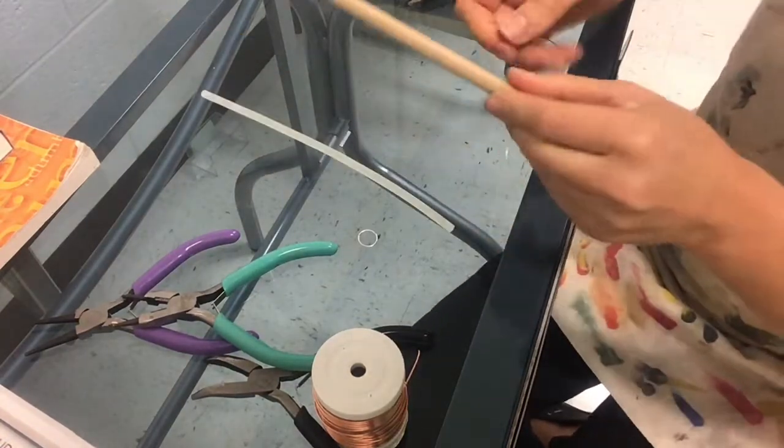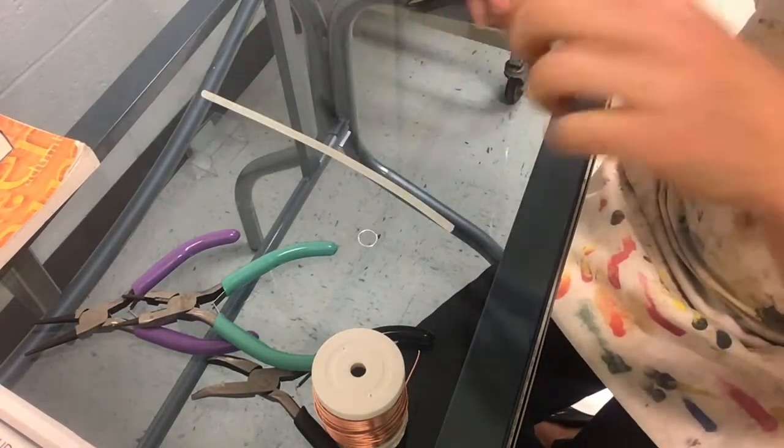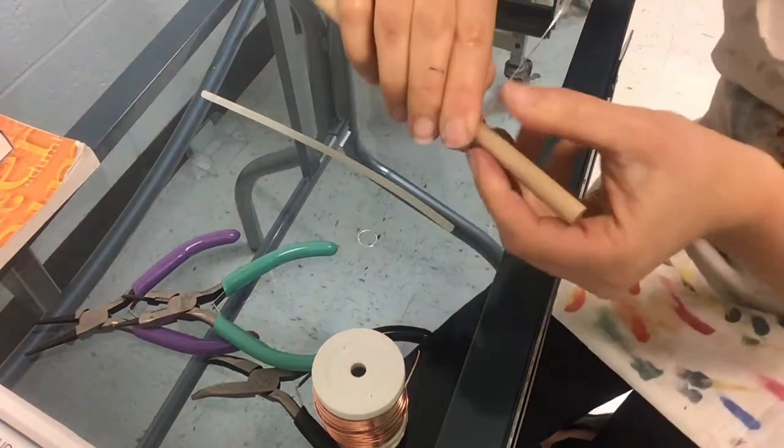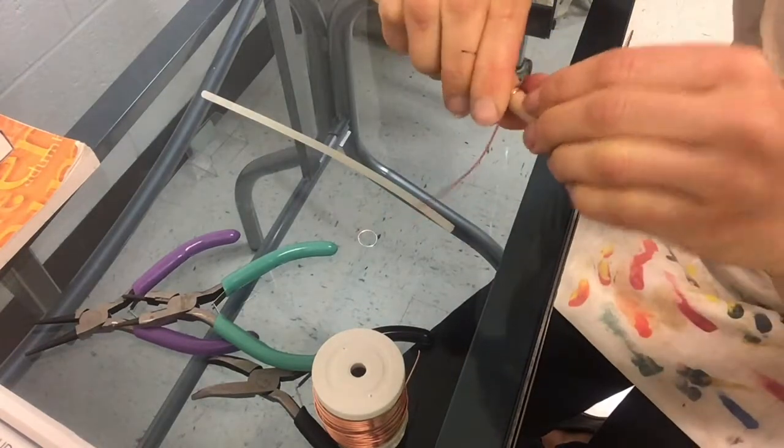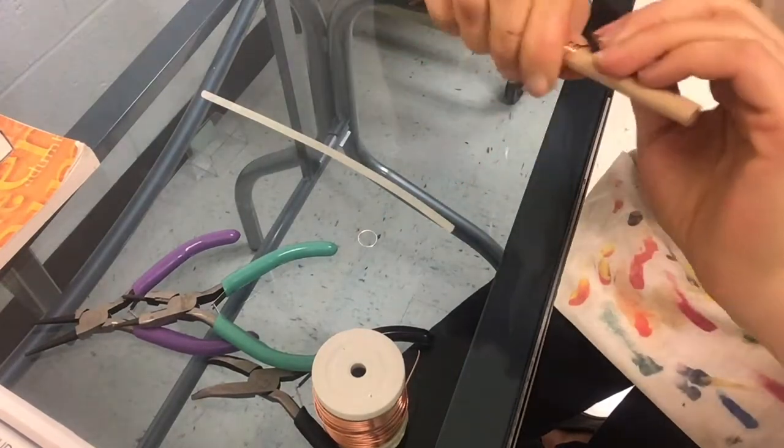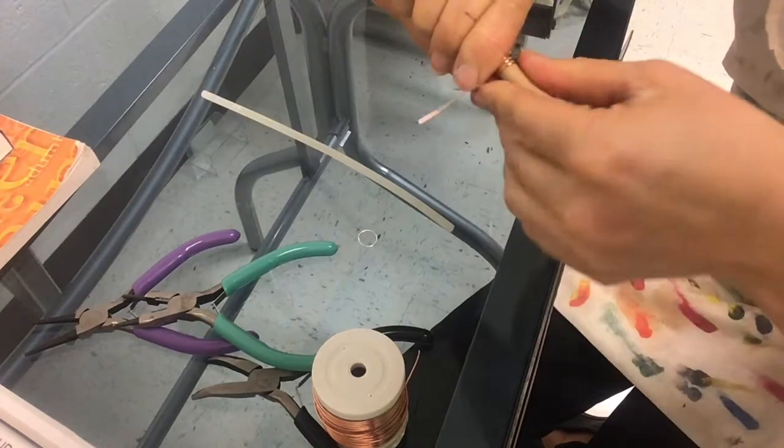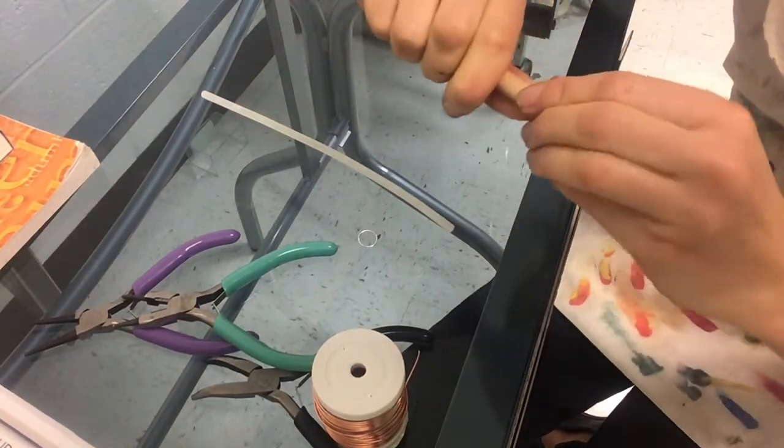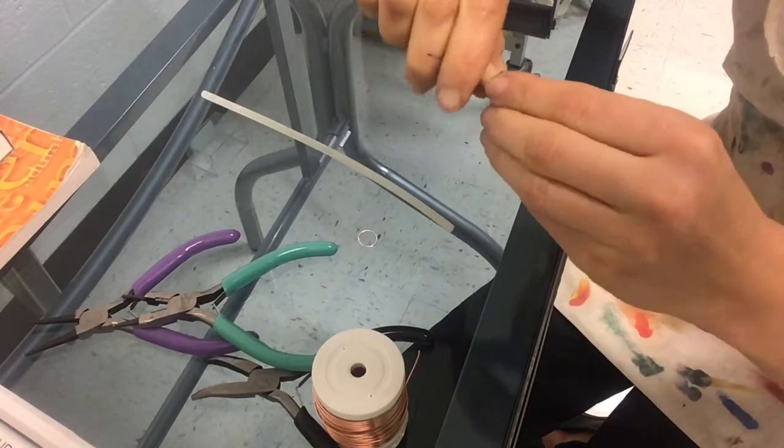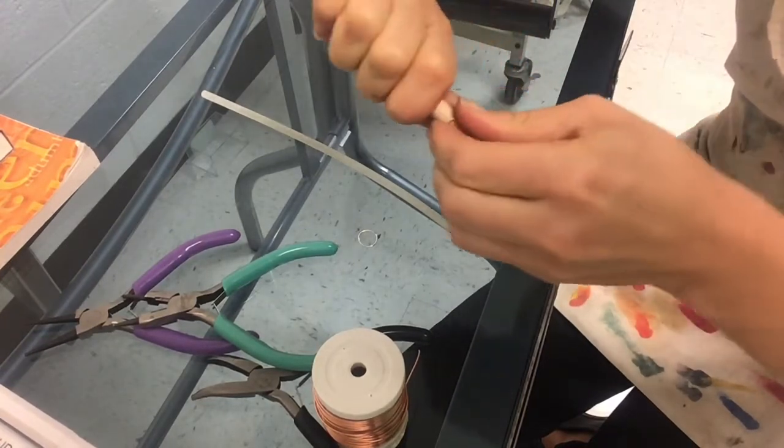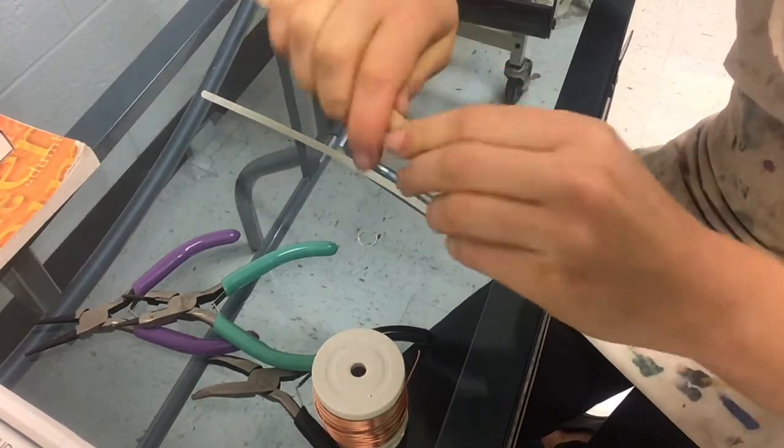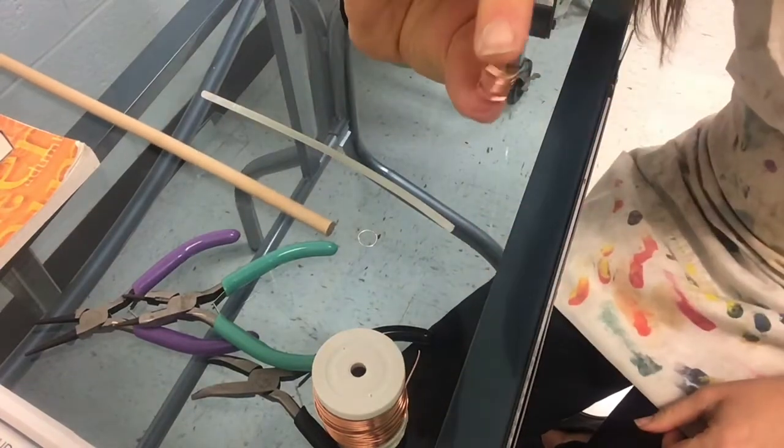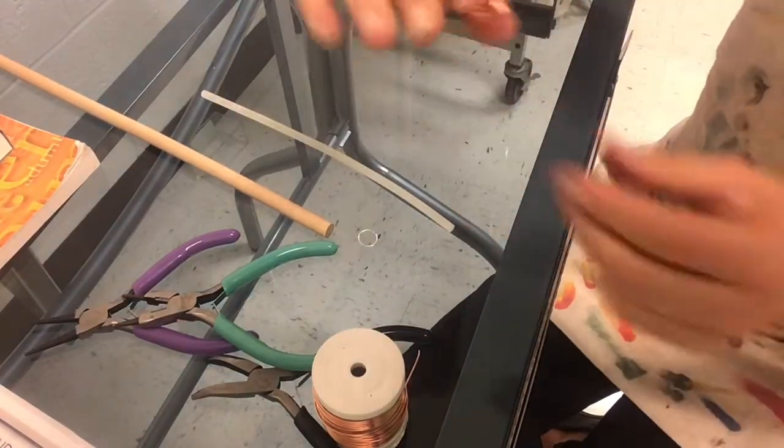And I'm going to show you with the dowel rods for time's sake. And what you're going to do, it's very simple. You're going to take your hands and your wire and you're going to wrap your wire around your form. You can take it off and you'll see you have something that looks like a spring.